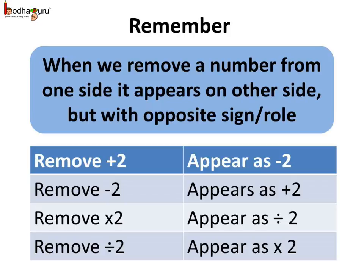So remember children what we learnt today about solving a simple equation. When we remove a number from the one side of the equation, it appears on the other side, but with opposite sign or role we can say.